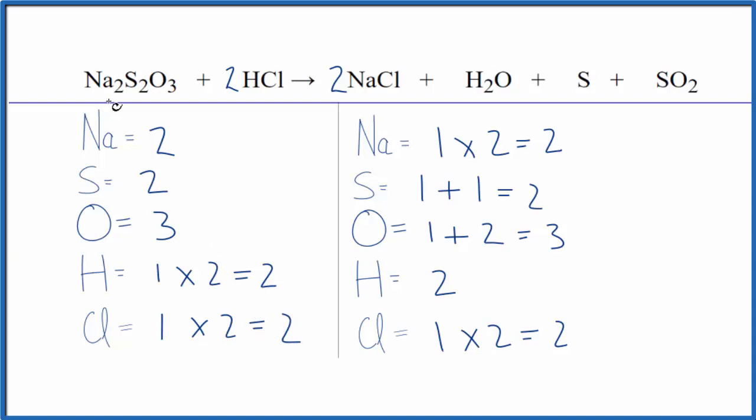This is the balanced equation for Na2S2O3 plus HCl. In a lab setting, you'd have your sodium thiosulfate and your hydrochloric acid, they would be aqueous, you'd mix them together.